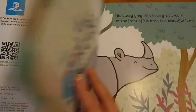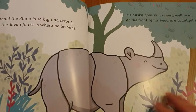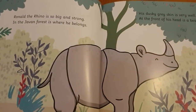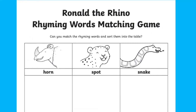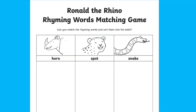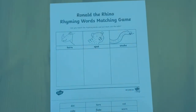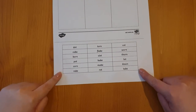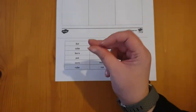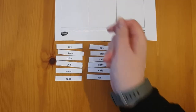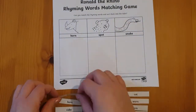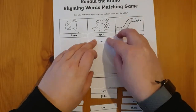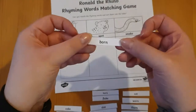Since Ronald the Rhino is a rhyming story, some of our English resources are linked to rhyme and poetry. Why not try this rhyming words matching game to help your child practise rhyming? Simply download and print the activity, then cut up the rhyming words and sort them into the table to match them.